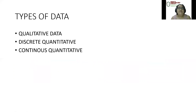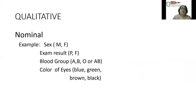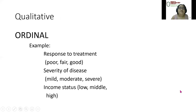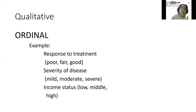We have different types of data: qualitative, discrete quantitative, and continuous quantitative. Qualitative data can be further subdivided into nominal — for example, sex, exam result, blood group, color of eyes — and ordinal, which has ranking: response to treatment could be poor, fair, or good; severity of disease could be mild, moderate, or severe; or income status could be low, middle, or high.